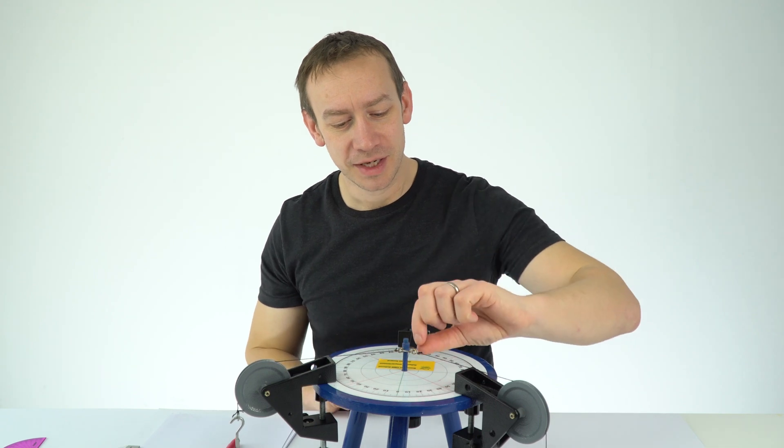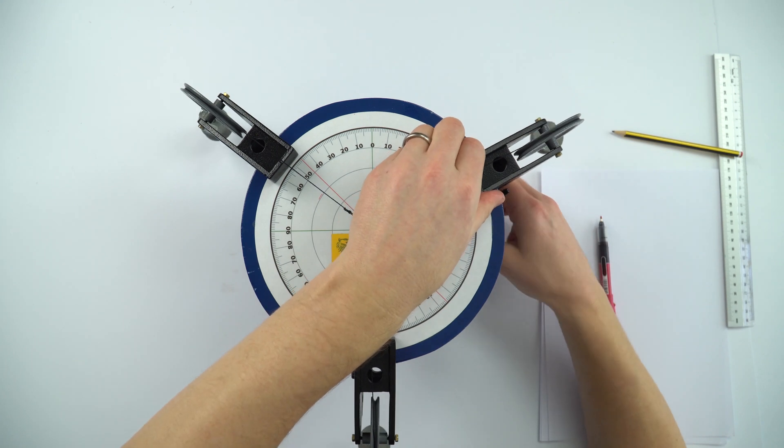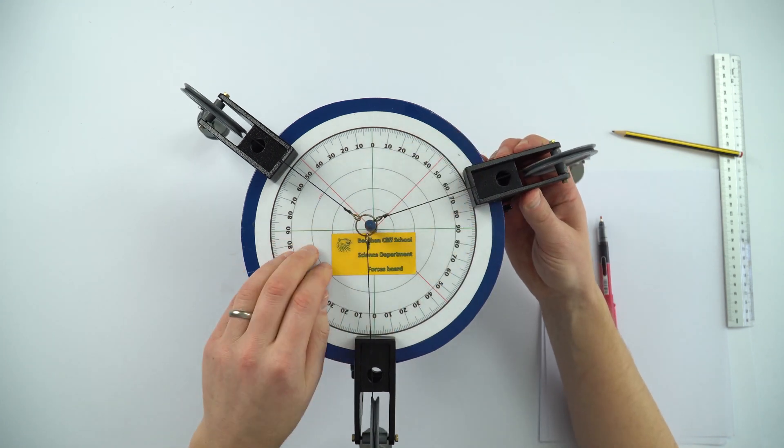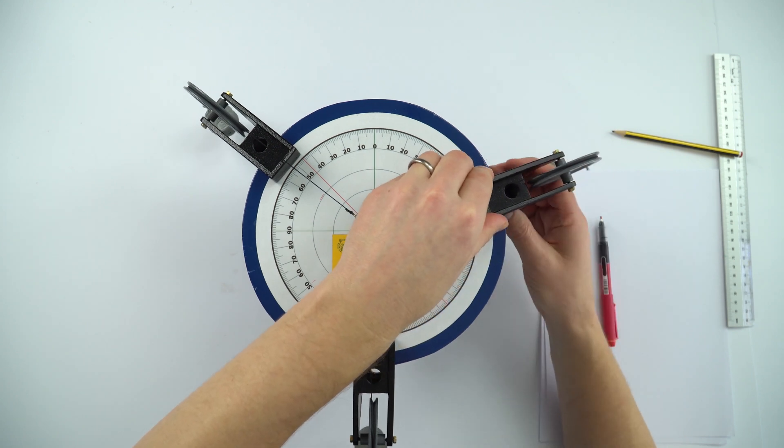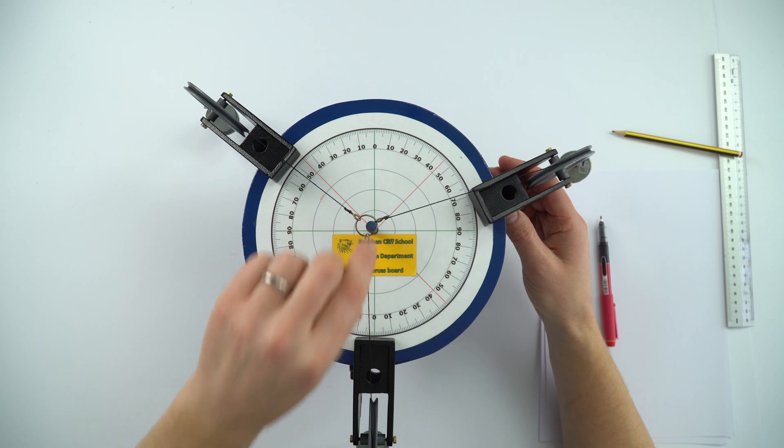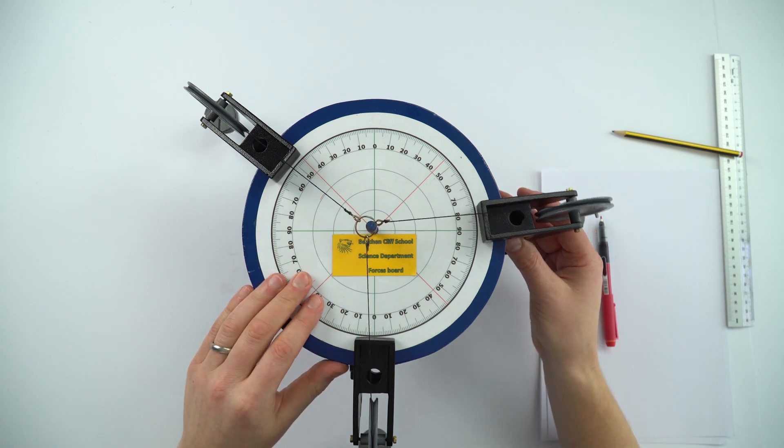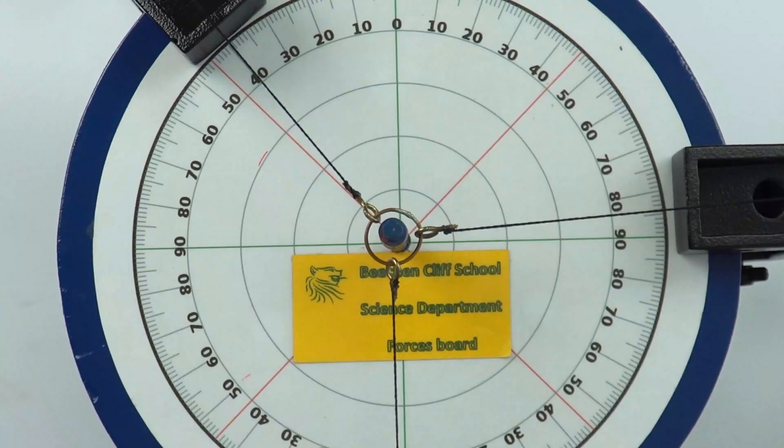We can see at the moment that this isn't central. So what we can do is actually move these around just by loosening the pulley there and I'm just going to adjust this until the central ring isn't touching the wooden part in the center. With a bit of fiddling I've now got this sorted out.